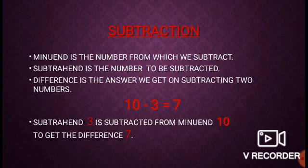Subtraction. Minuend is the number from which we subtract. Subtrahend is the number to be subtracted. Difference is the answer we get on subtracting two numbers. 10 minus 3 equals 7. Here 10 is the minuend, 3 is the subtrahend, and 7 is the difference. Subtrahend 3 is subtracted from minuend 10 to get the difference 7.